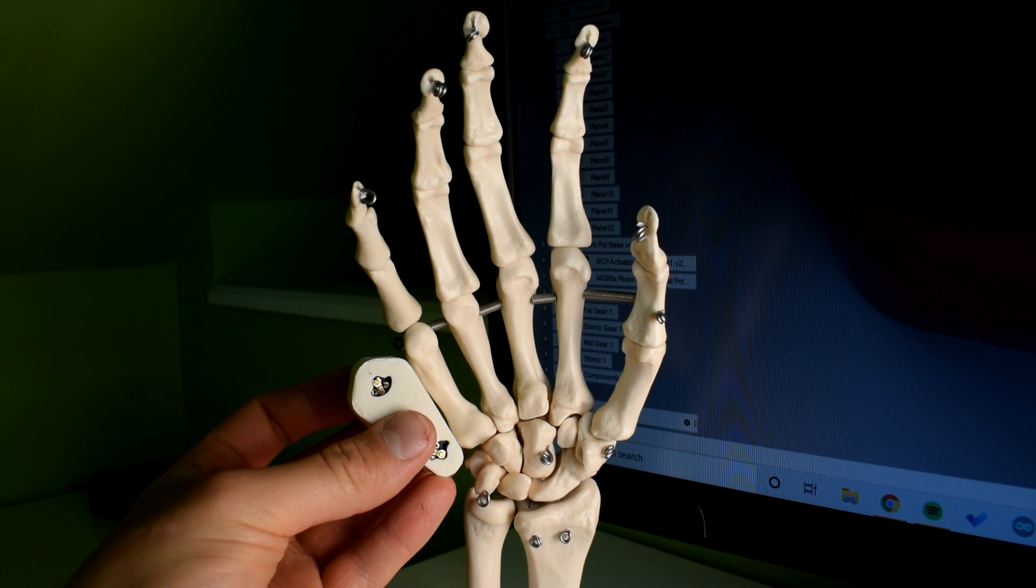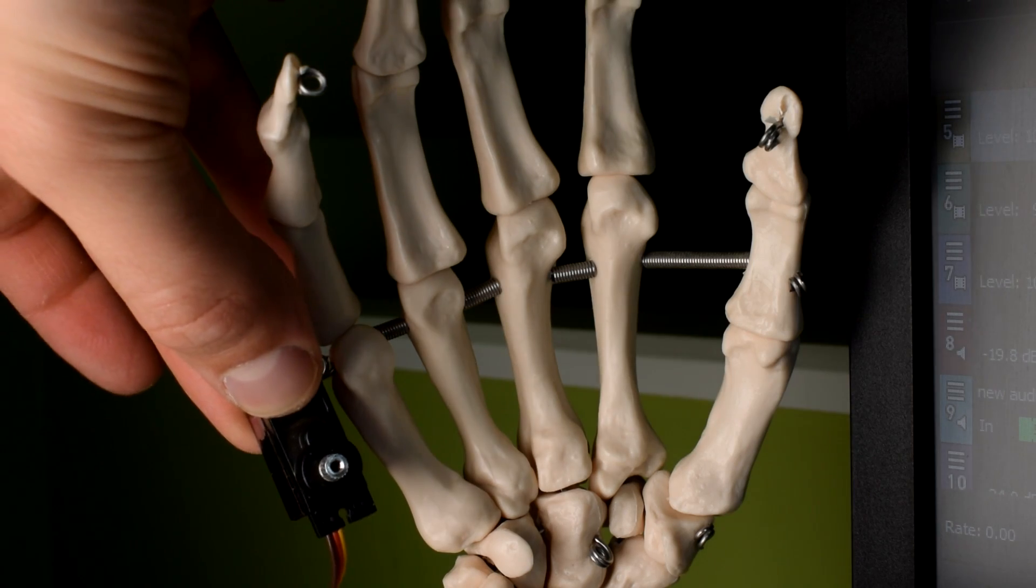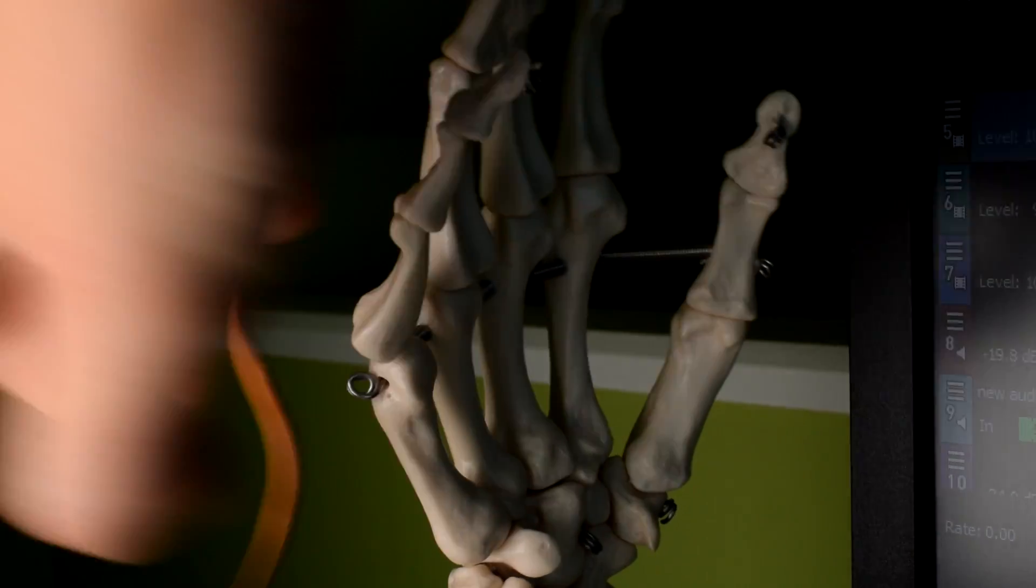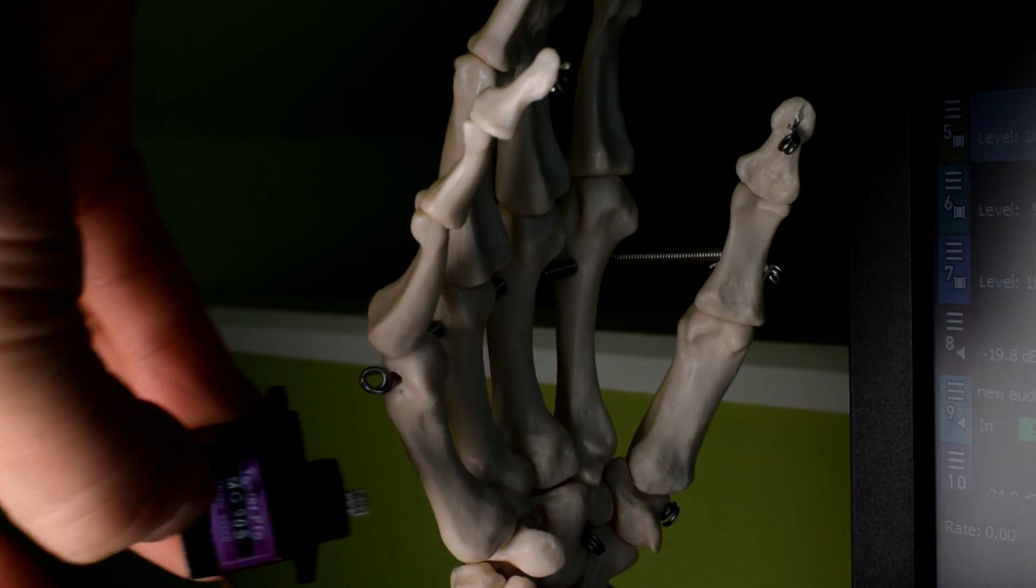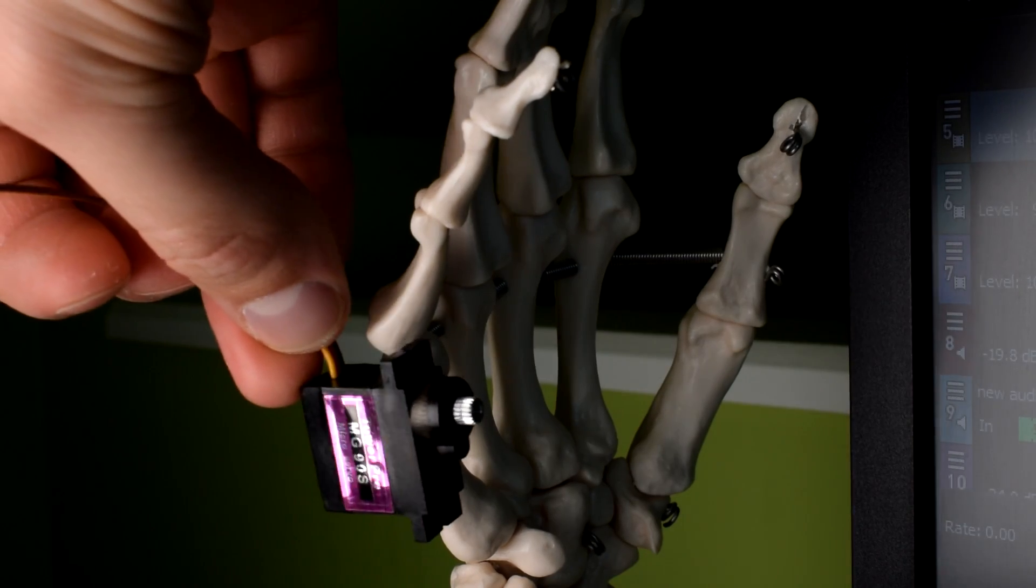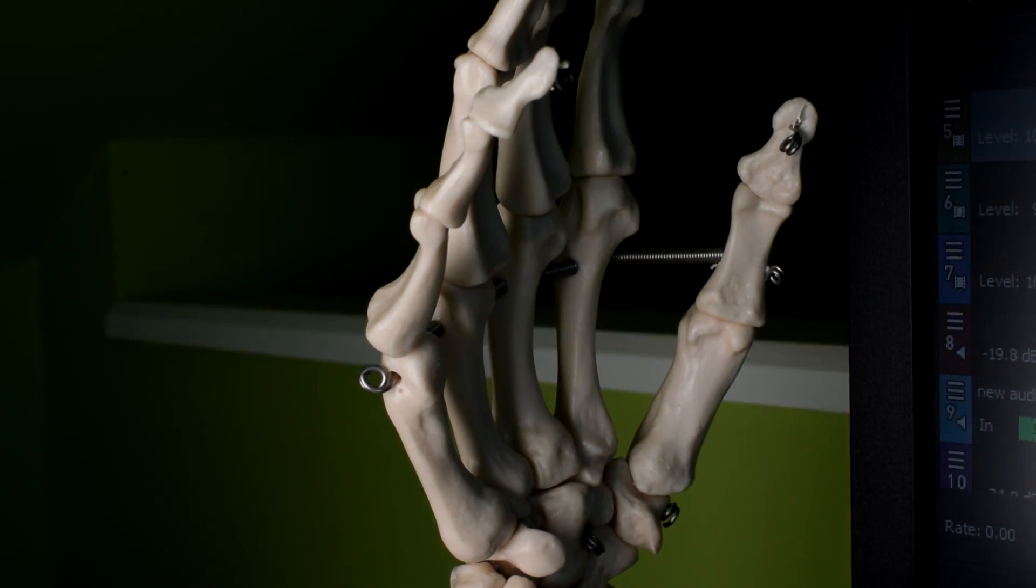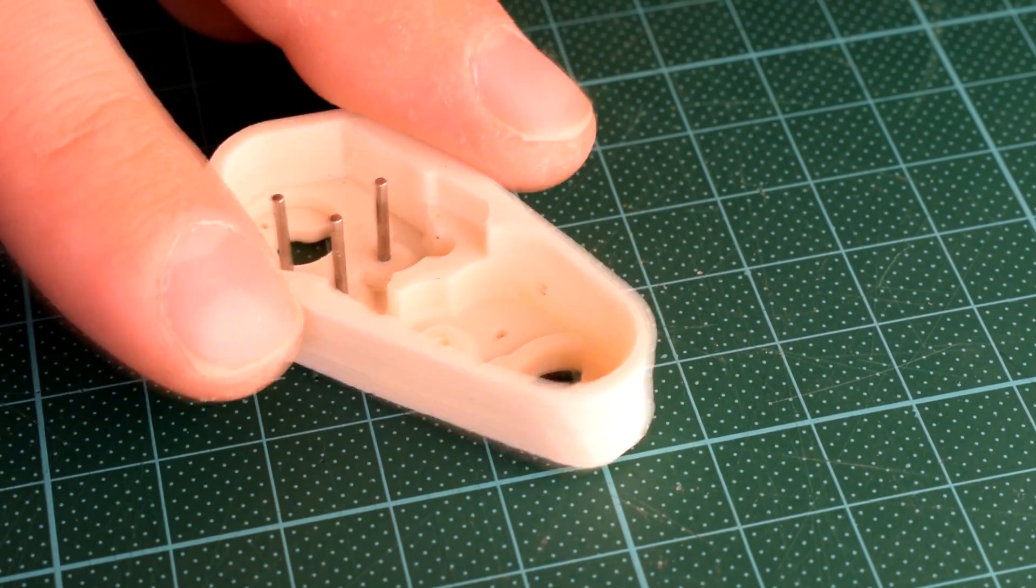I could have just directly put MG90s servos into the palm of the hand, but they wouldn't have been thin enough. Despite the fact that the servos are really well designed and really compact, they are just a little bit too tall for what would be ideal. So I decided to try and integrate them into the palm of the hand by changing the arrangement of the gears.